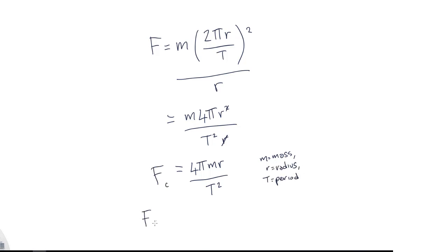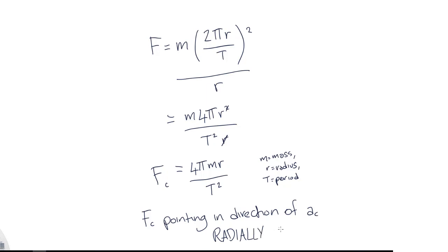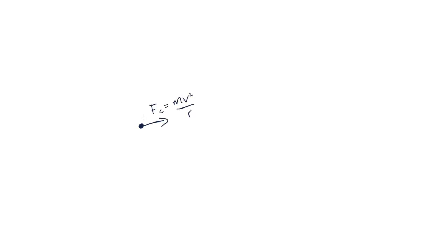We also know that the centripetal force must be pointing radially inwards, because it is pointing in the same direction as the centripetal acceleration. We also know that this must be perpendicular to the tangential velocity of uniform circular motion. So an object undergoing uniform circular motion experiences a force radially inwards equal to mv²/r, and a velocity perpendicular to this force as it orbits the centre of the circle.